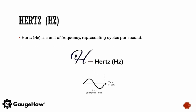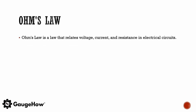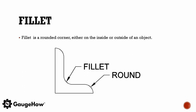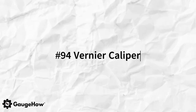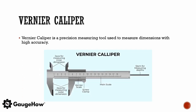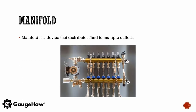Hertz is a unit of frequency representing cycles per second. Ohm's law is a law that relates voltage, current and resistance in electrical circuits. A fillet is a rounded corner either on the inside or outside of an object. A vernier caliper is a precision measuring tool used to measure dimensions with high accuracy. A manifold is a device that distributes fluid to multiple outlets.